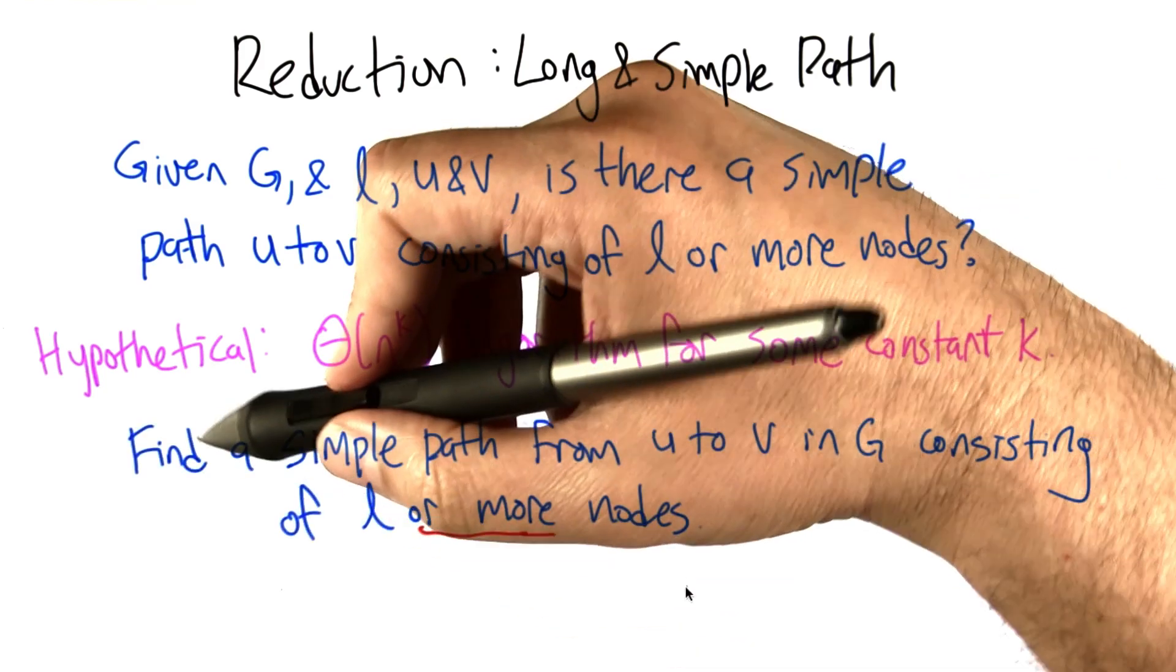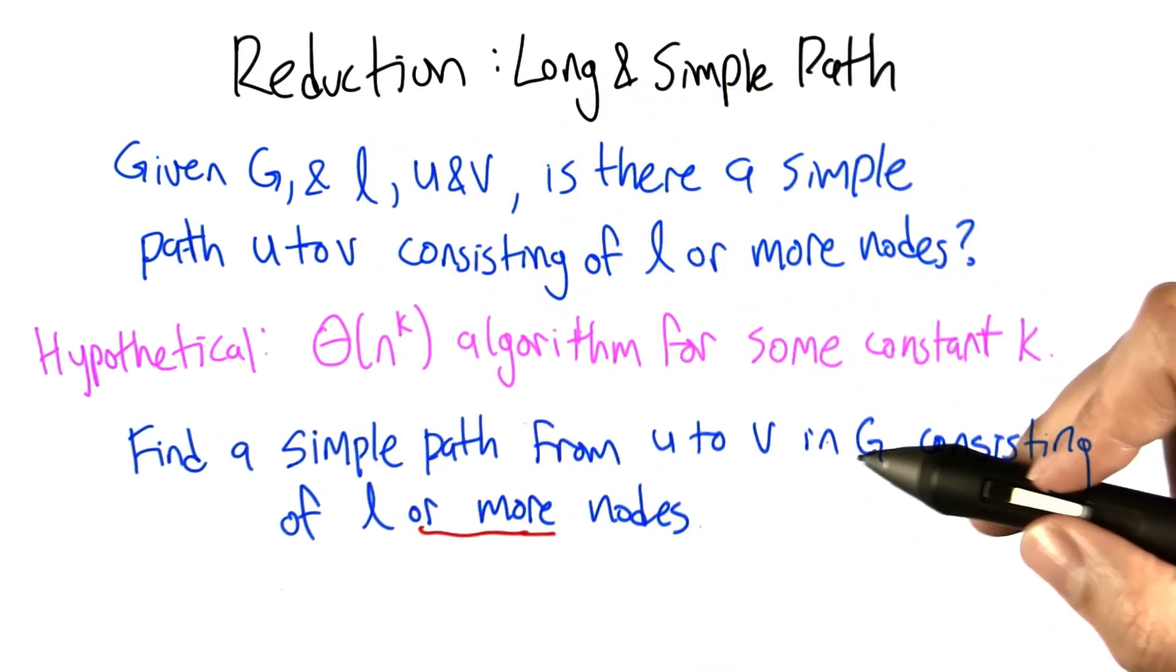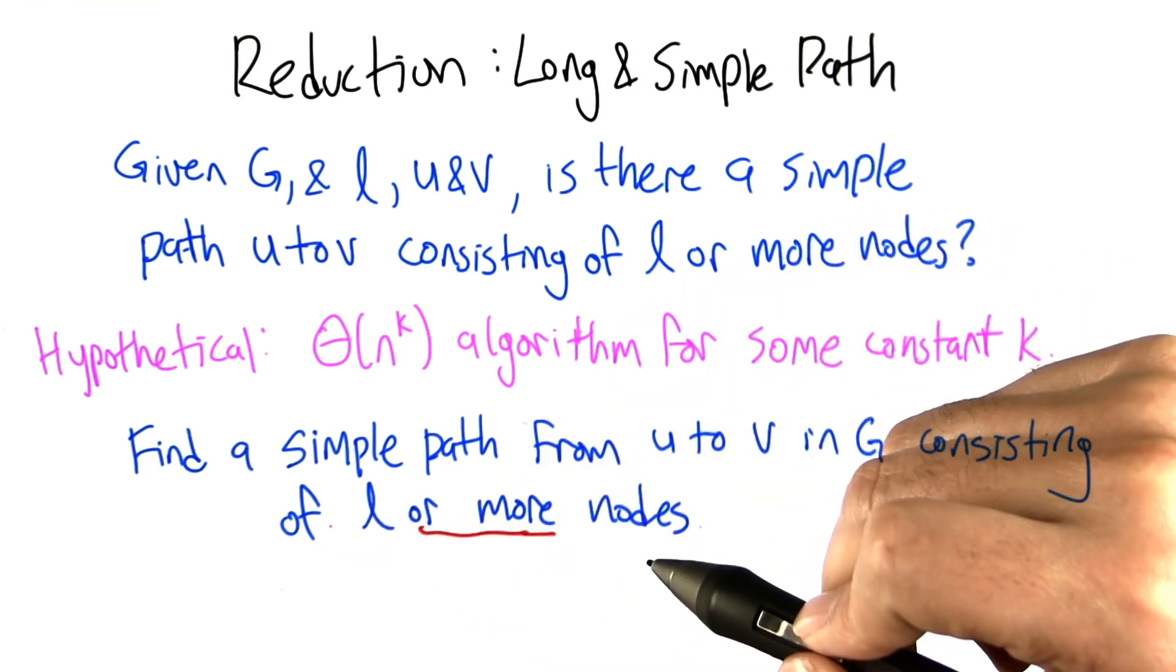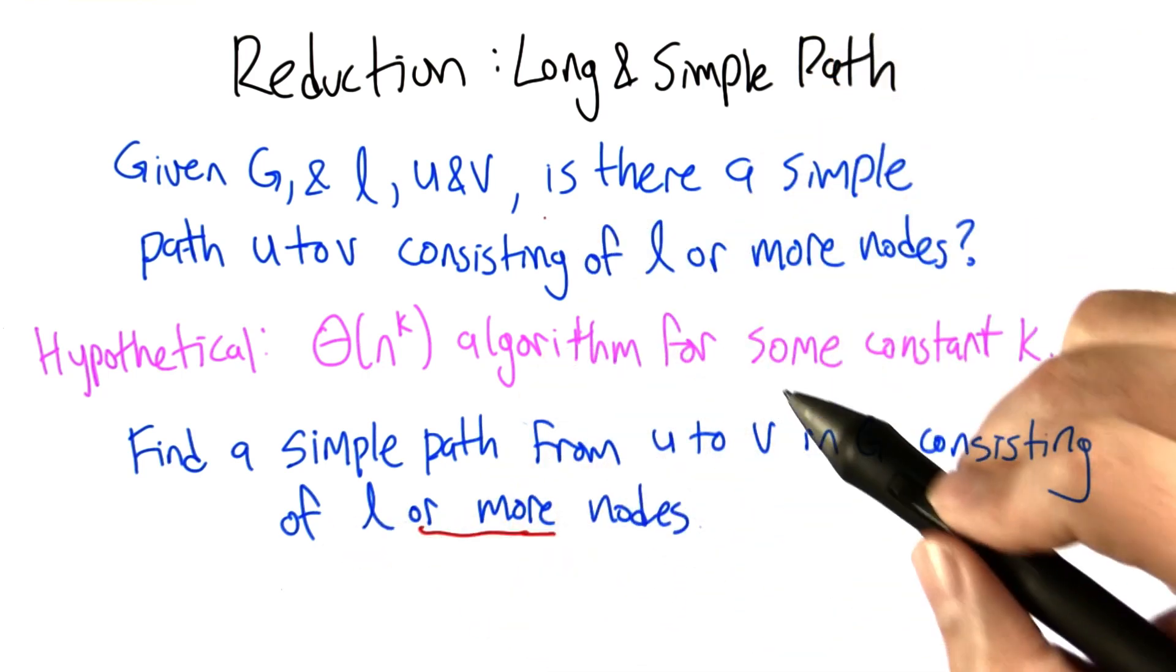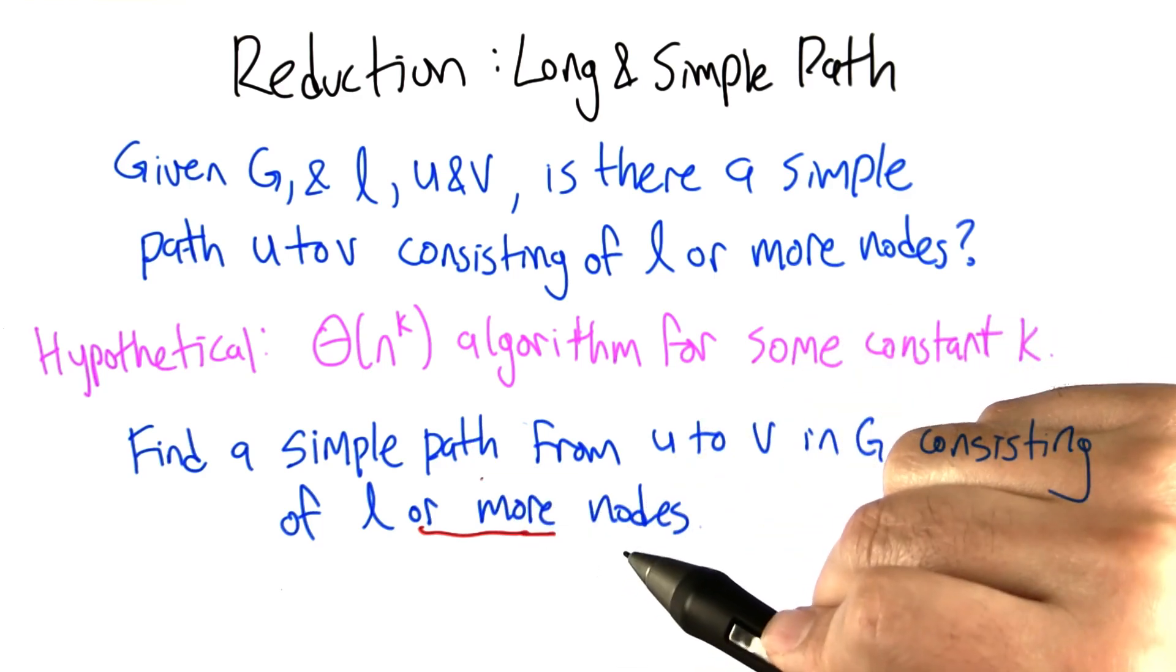All right, now here's a different problem. Find a simple path from U to V in G consisting of L or more nodes. So this one is just asking the yes or no question. This one is actually asking for the path.